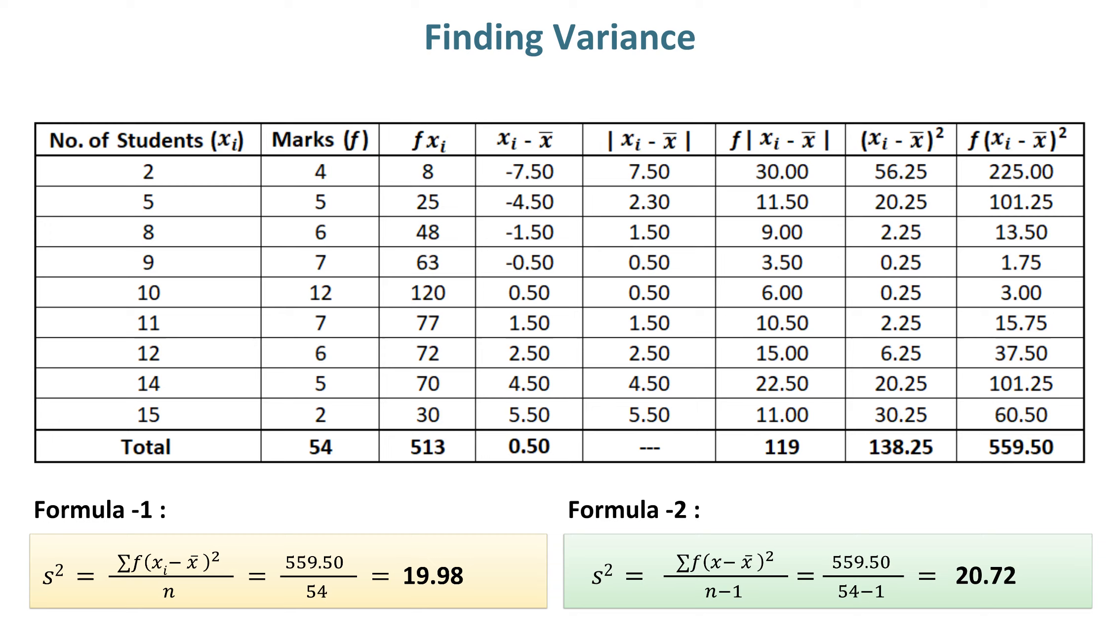When we subtract 1 from sample size in Formula 2, then the value of variance becomes little higher as compared to Formula 1, which is 20.72.